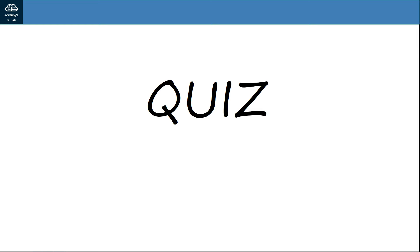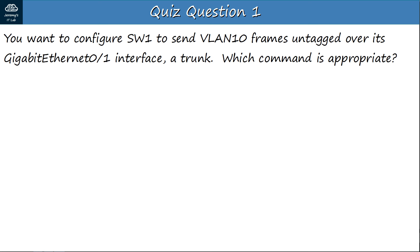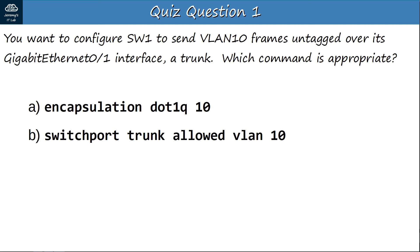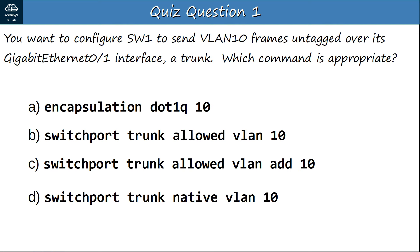Quiz question 1: You want to configure SW1 to send VLAN10 frames untagged over its GigabitEthernet 0/1 trunk interface. Which command is appropriate? A: encapsulation dot1Q 10. B: switchport trunk allowed vlan 10. C: switchport trunk allowed vlan add 10. D: switchport trunk native vlan 10. The answer is D — switchport trunk native vlan 10. Traffic in the native VLAN is sent untagged over the trunk. A is used on a router sub-interface; B and C modify allowed VLANs.